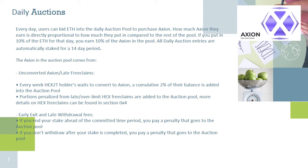The daily auction — putting tokens and value into your pocket. To get Axion, it needs to be claimed by HEX2T holders. The longer they wait to claim, the more penalties they face — about 2% of their total per week. This 2% is added into a daily auction pool where people can bid using ETH on the Axion tokens within it. If you bid 10% of the ETH on that day, you get 10% of the pool rewards. 80% of the ETH paid in the auction is then used to hyperdrive both the Axion token and stakers' earnings — the ETH is used to purchase tokens, boosting the token price, and those tokens are distributed to stakers, creating a very strong positive feedback loop.